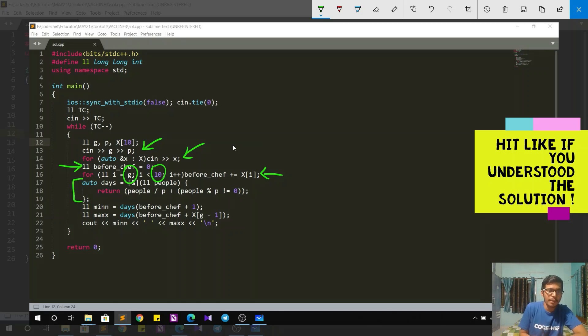So to calculate the minimum amount of days in which Chef will get vaccinated, I have to add 1 to the before Chef variable. So that is done over here and in the other case for maximum answer, all the people in Chef's group will be added to the before Chef count. So this is what this function does is basically returns me the seal value. So it returns me the seal value of total number of people that is vaccinated at the rate of p people per day.